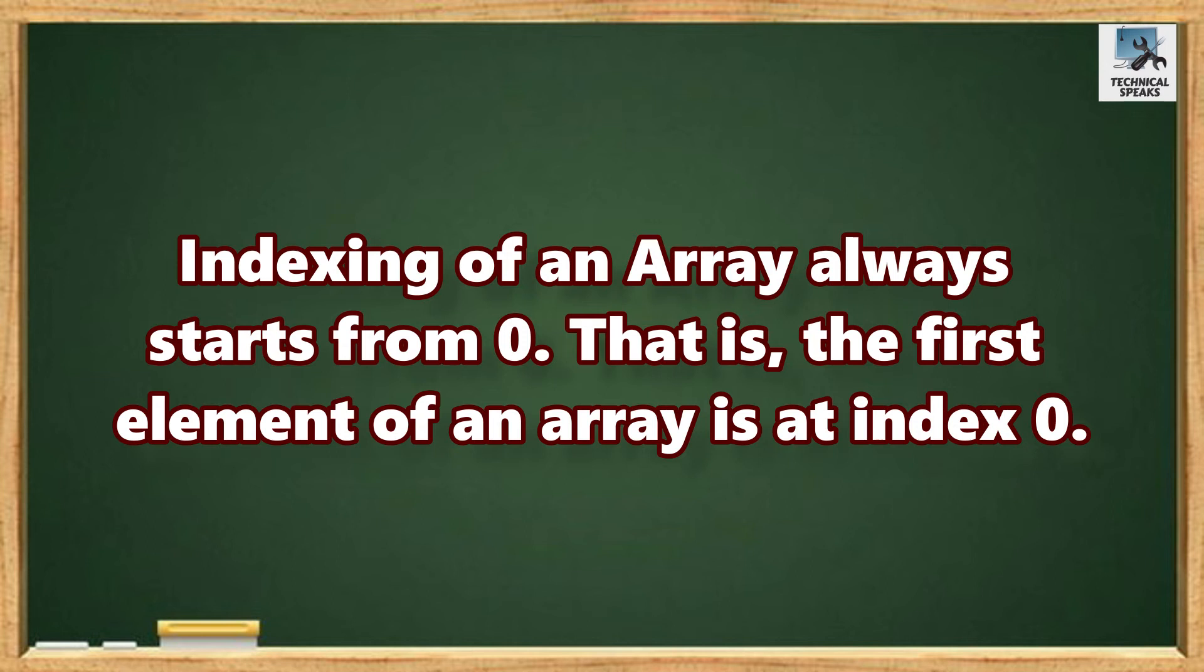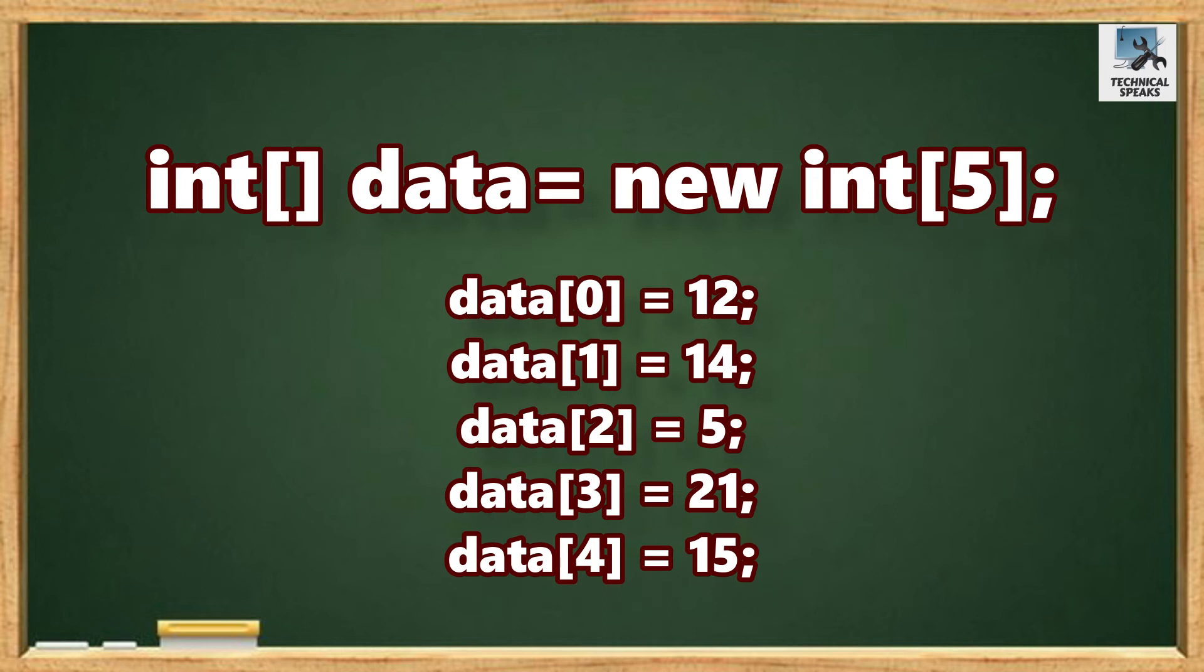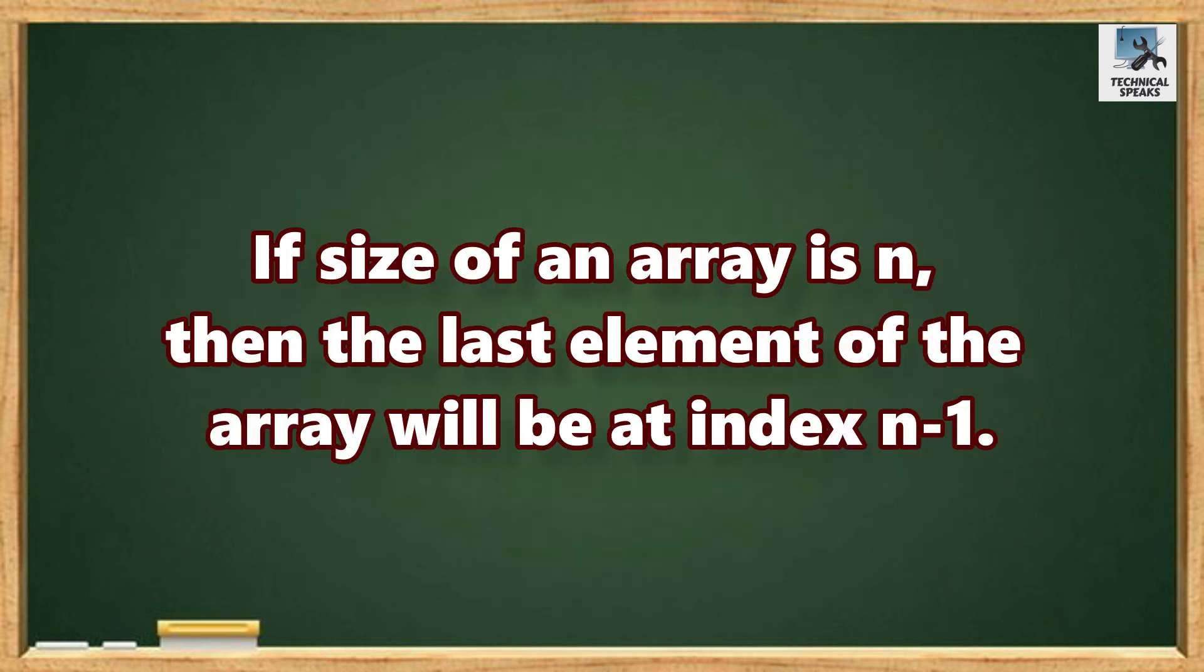an array always starts from 0. That is, the first element of an array is at index 0. Here, the first element is 12, which is at index 0. If the size of an array is n, then the last element of the array will be at index n minus 1.